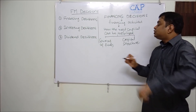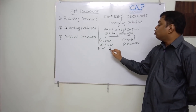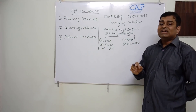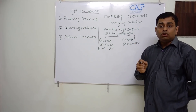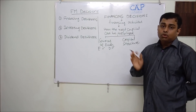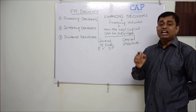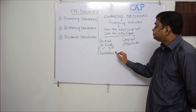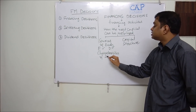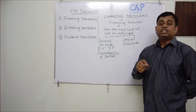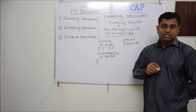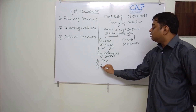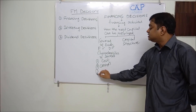While choosing a source — should I go with equity, should I go with debt — to answer this question you need to understand that each and every source of fund has its own advantages, its own limitations, its own characteristics. We need to understand three things: one is cost, second is control, third is risk.